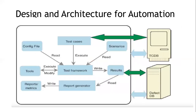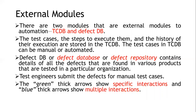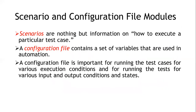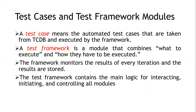The green arrows shown indicate specific interactions between the framework and the external modules. The blue line shows multiple interactions, while the green line shows specific interactions. The next topic is the scenario and configuration file modules. A scenario defines how test cases are to be executed. The configuration file is a set of variables used to execute the automation — it is important when we need to run test cases for various execution conditions, different input and output conditions, and state conditions.